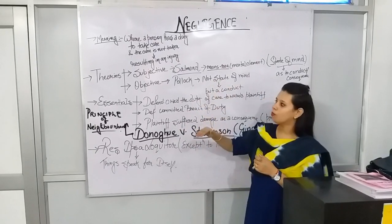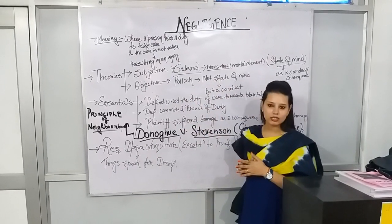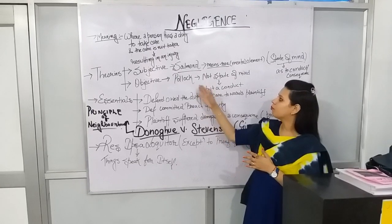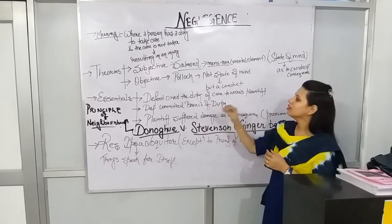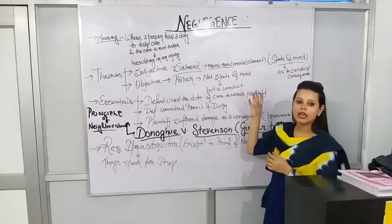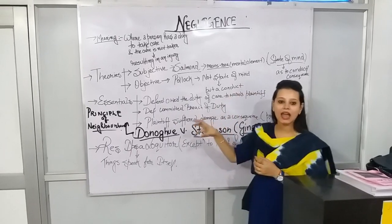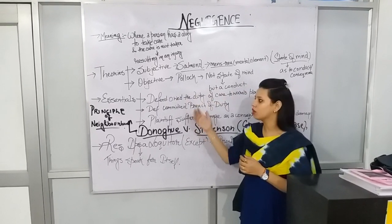In contrast, the objective theory was laid down by Pollock. He said that negligence is not a state of mind — it is an act and it is an independent law.